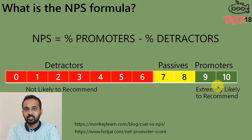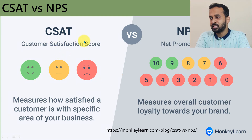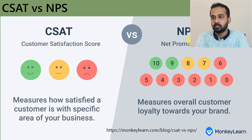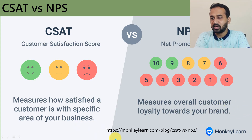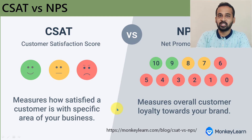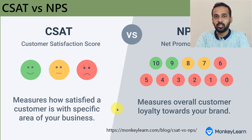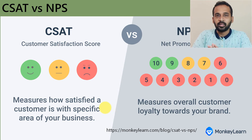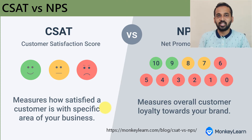Now let's understand the difference between these two. C-SAT — customer satisfaction score — measures how satisfied a customer is with a specific area of your business. Whereas NPS — net promoter score, ranging from 0 to 10 — measures overall customer loyalty towards your brand. The reference links for this information are added into the respective slides, so you can check them out via the link in the video. Now let's understand the data, how it actually looks and how we are going to integrate it into Power BI.